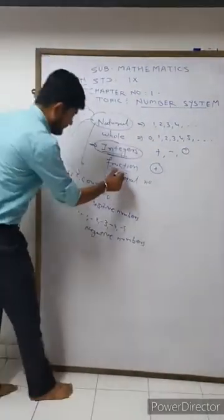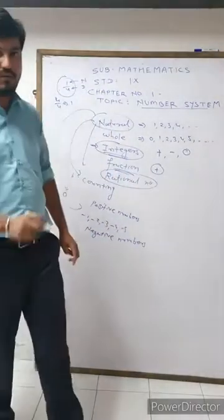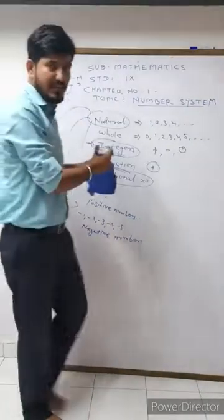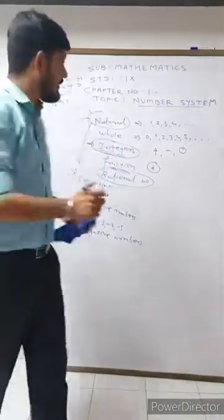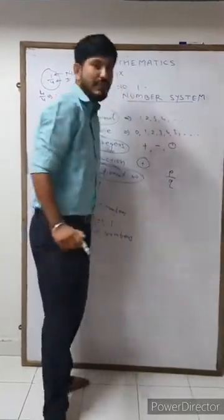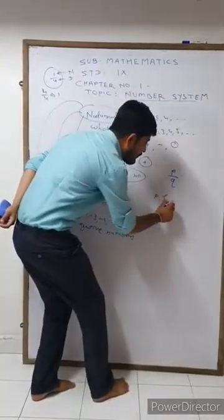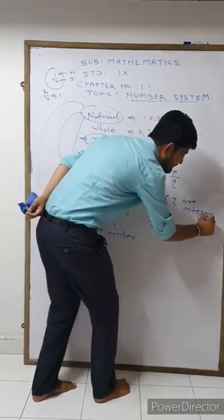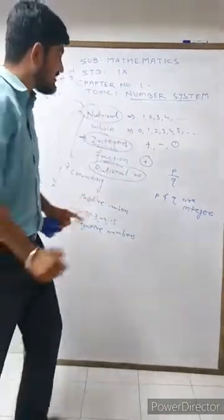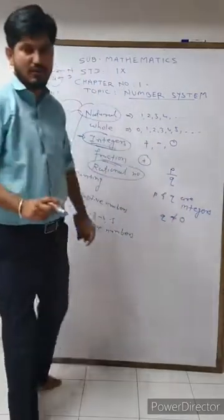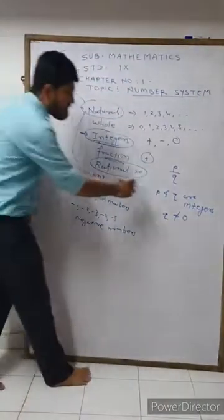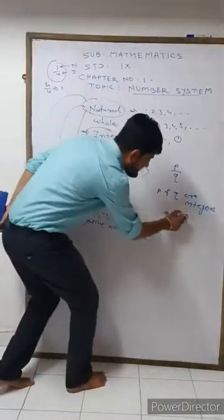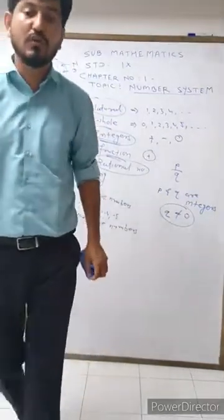Now, most importantly in the number system, we study rational numbers. A rational number is also a type of fraction, but it is different. Any number we write in the form p by q, where p and q are integers and the condition is that q is not equal to zero, is known as a rational number.